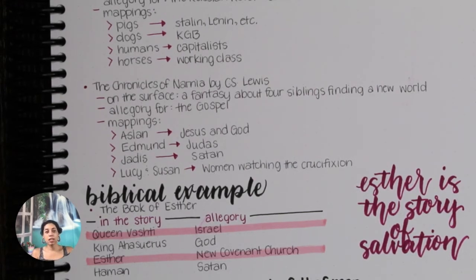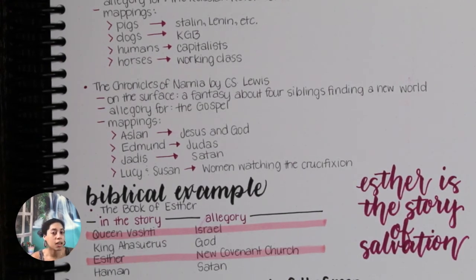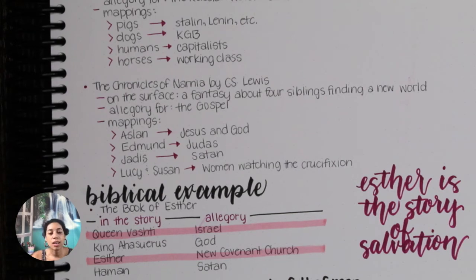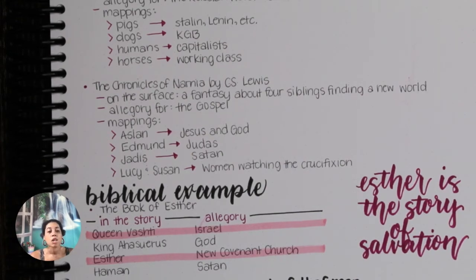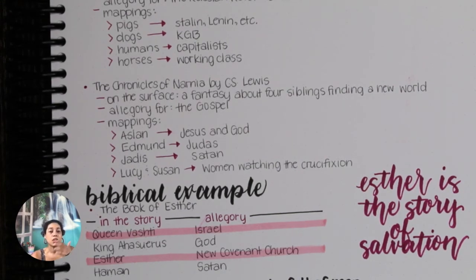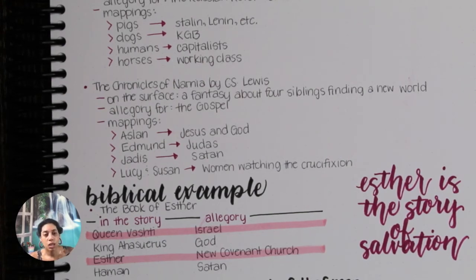Esther is then tasked to do something about it. She is supposed to approach the king, which is potentially life-threatening because she's not allowed to just go to the king — she has to be called. It's interesting because she fasts and then she goes to the king, whether he will take her or not. The king holds out his scepter to accept her coming to him. And when she comes to him with her request and her problem, he allows her the power to reverse the situation so that Haman cannot kill her people, but that her people can triumph over their enemies.